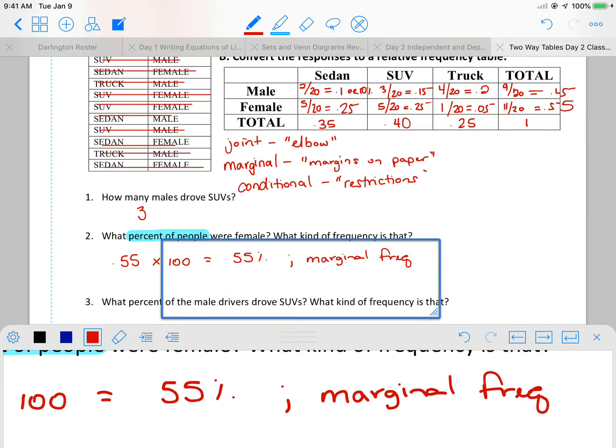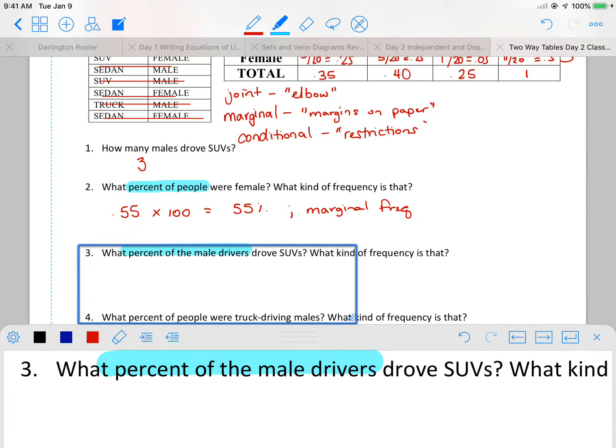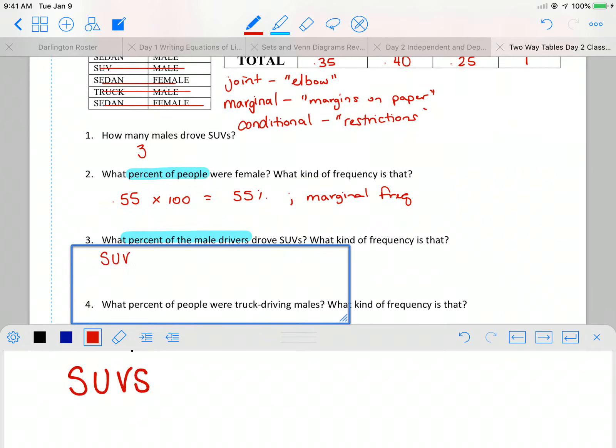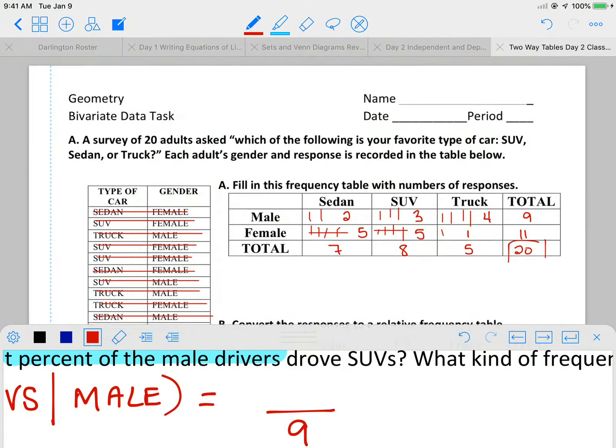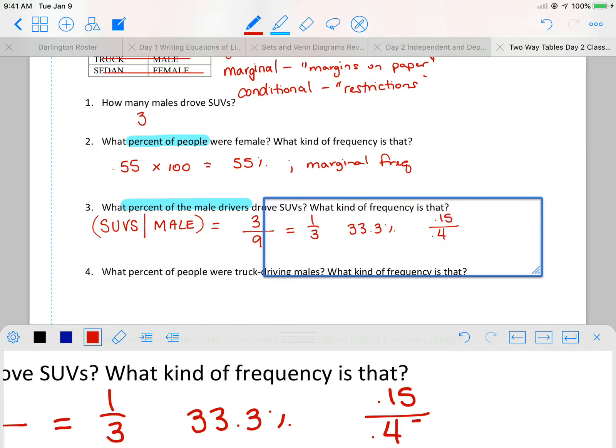Our next one. What percent of male drivers drove SUVs? Sorry, too much highlight. What percent of male drivers? Now, we're no longer talking about everybody in my survey. I'm only talking about male drivers. So what this has looked like for us the past couple of weeks is I want SUVs given they were male. So I am restricting my sample space to males, which is always my denominator. My given is always on the bottom. And I had nine males surveyed. And then of those nine males, three of them drove an SUV. And that becomes one-third, which we know is 33.3%. You could have also used your relative data and you could have went 0.15 over 0.45 and it would have got you the same way. Same answer all around.